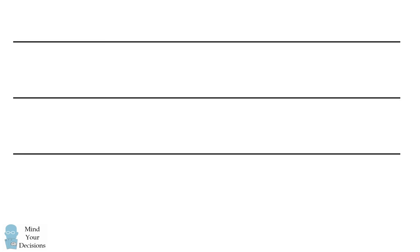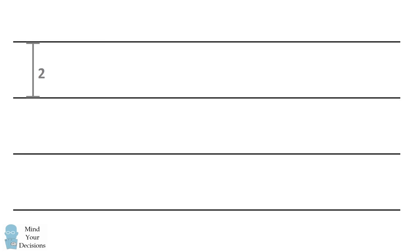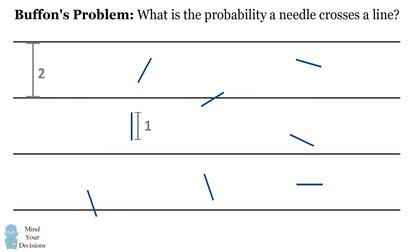Hi, this is Presh Talwalkar. Consider a floor with horizontal lines that are spaced two units apart. You drop a needle of length one on the floor. Sometimes when you drop the needle it'll intersect one of the horizontal lines, but other times it won't. You can imagine repeating this experiment many times. The question is Buffon's needle problem: what is the probability that a randomly dropped needle will cross one of the horizontal lines?